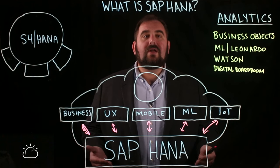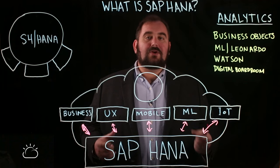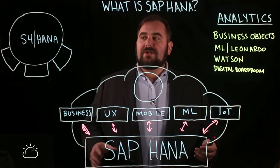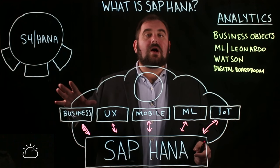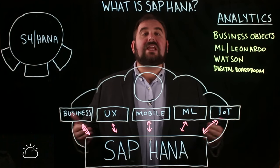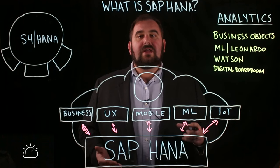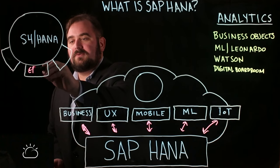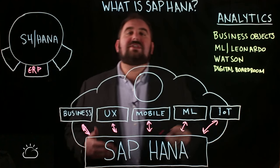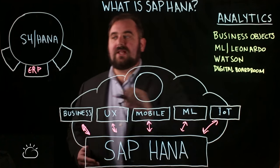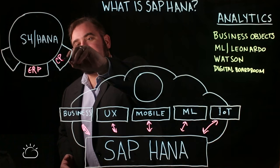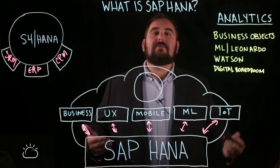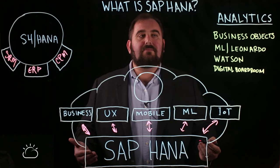HANA is the core of your digital enterprise — it is the core database that everything feeds into. Now let's talk about S4 HANA. S4 HANA is the application suite that goes around it. You've got three fairly standard components: the first is your ERP, the traditional SAP product that everybody knows about. But you've also got the CRM piece and an SRM piece. These are all important components of that S4 HANA deployment.